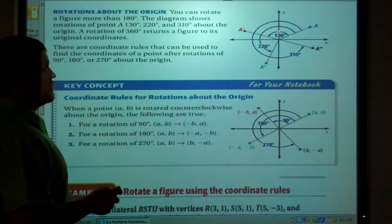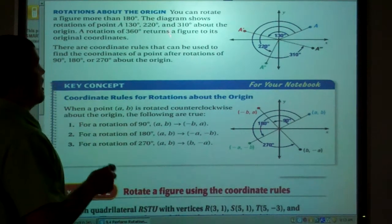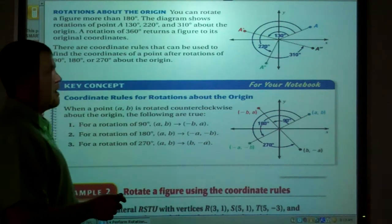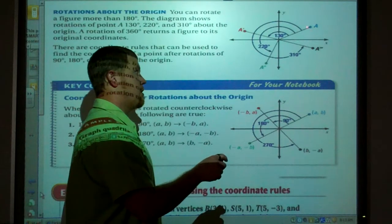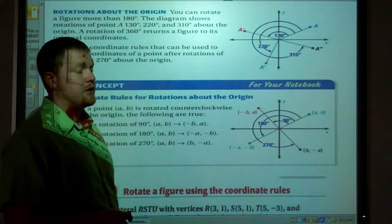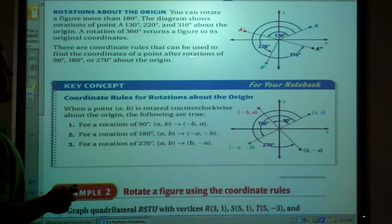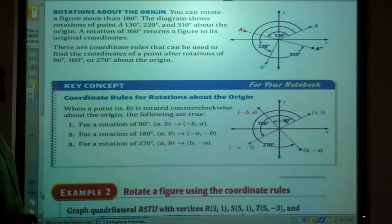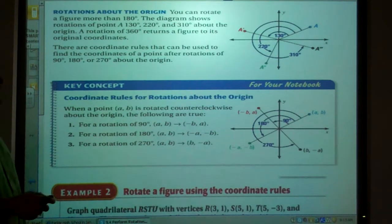Rotations about the origin, the origin of your coordinate axes here. You have any rotation and they can be larger than 180 degrees. Because if you think about it, if I go from point A all the way around and come back to point A, I've gone 360 degrees. So you can go 130, 220, 310, anything within a circle. A rotation of 360 degrees returns a figure to its original coordinates.